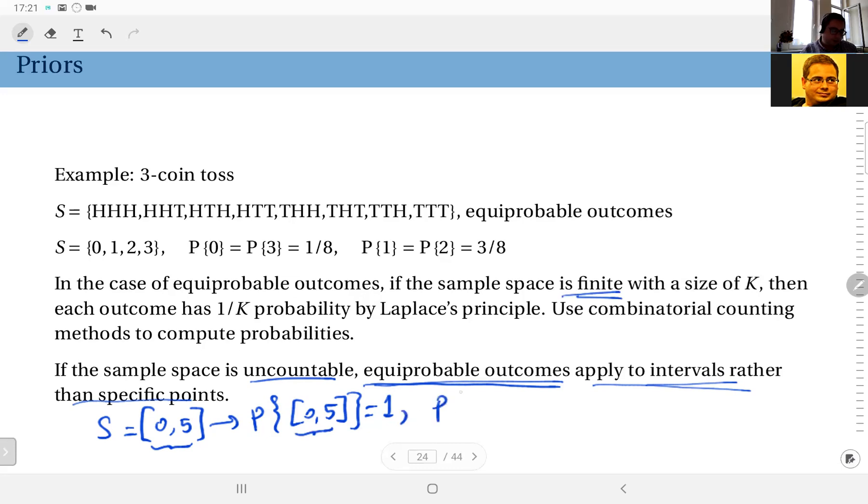Therefore, I can write under equiprobable outcomes assumption, the probability assigned to the interval 0 to 2 should be 2 divided by 5, which is the length of this interval 2 divided by the length of the sample space, which is 5.